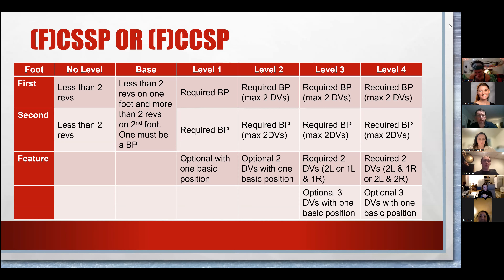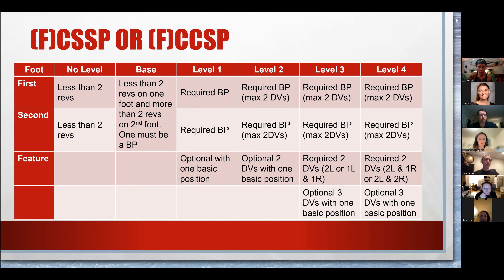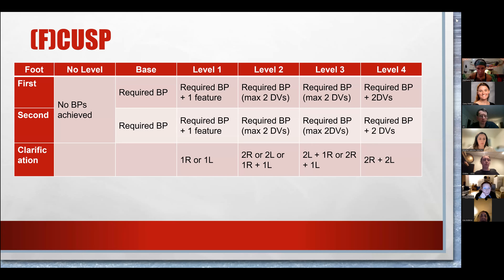For the upright change spin, the basic position on both feet is not a feature — it only applies to the sit and the camel. So to get level four on an upright change spin, you would need two features on one foot and two features on the second foot. You are not given that automatic level for having two upright positions on both feet.